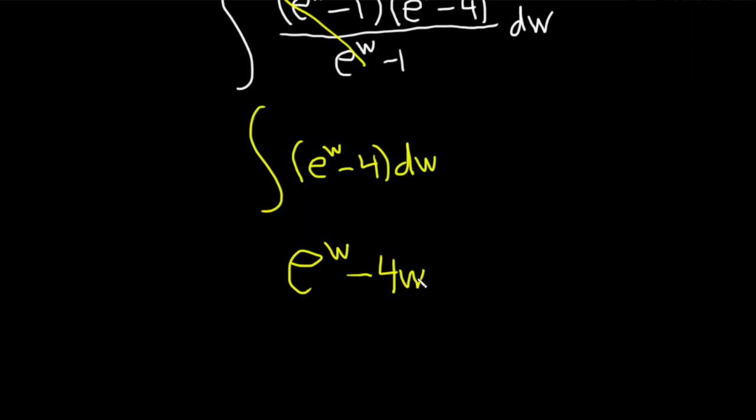And you can check that, right? The derivative of 4w is 4. And then we have a negative. And then we add our constant of integration, which is capital C.